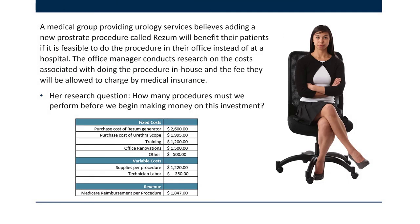Let's look at an example. We've got a medical practice manager whose principals want to add a new prostate procedure called RESM, because they think it'll benefit patients if done in the office rather than going to the hospital. The office manager researches the costs associated with getting set up — buying equipment, training, renovating the office, and other one-time fixed costs. She also finds out the variable costs: supplies consumed per procedure and labor from technicians. Finally, she finds out what she can charge. Because most patients are on Medicare, the limit is the Medicare allowance of $1,847.